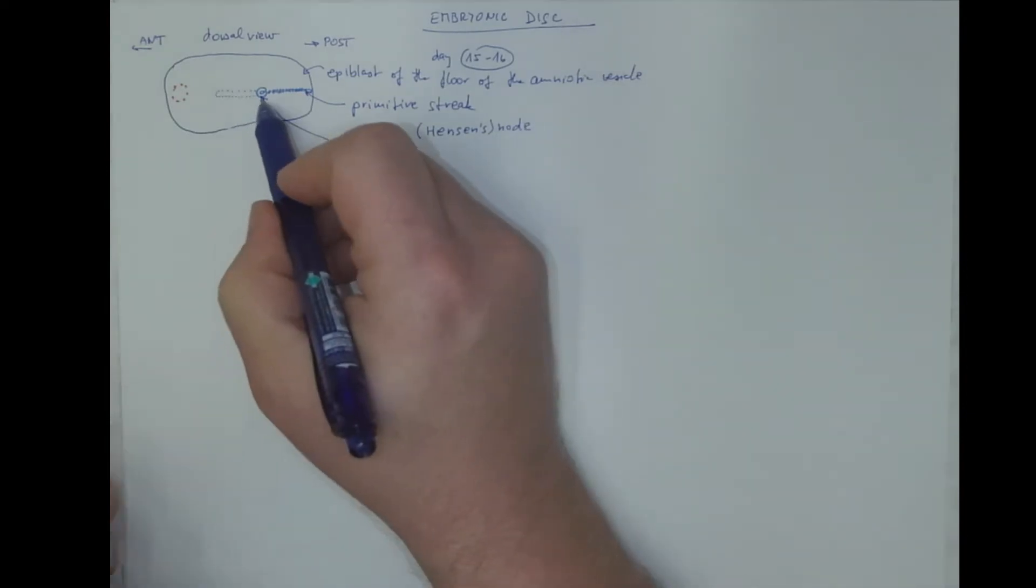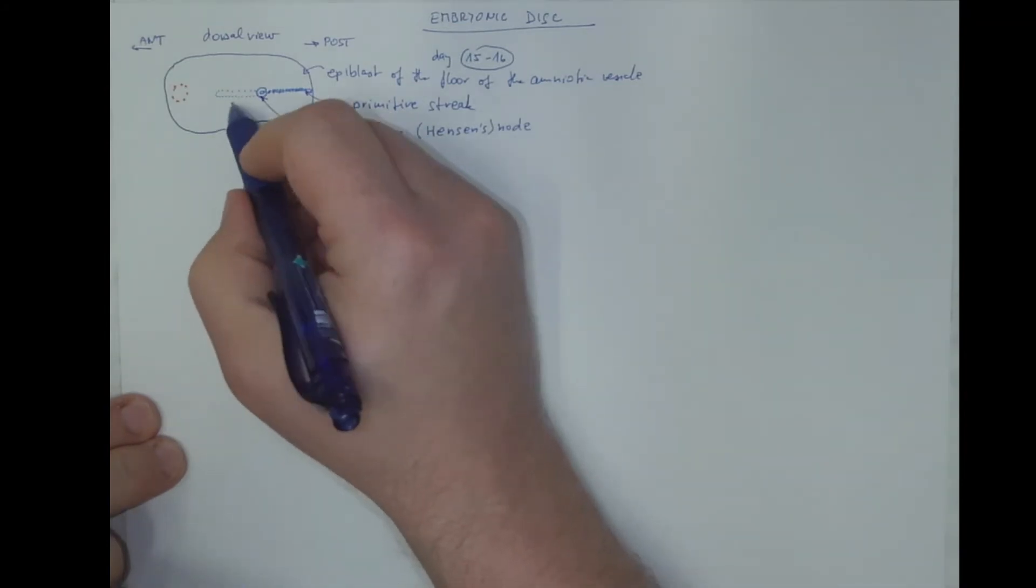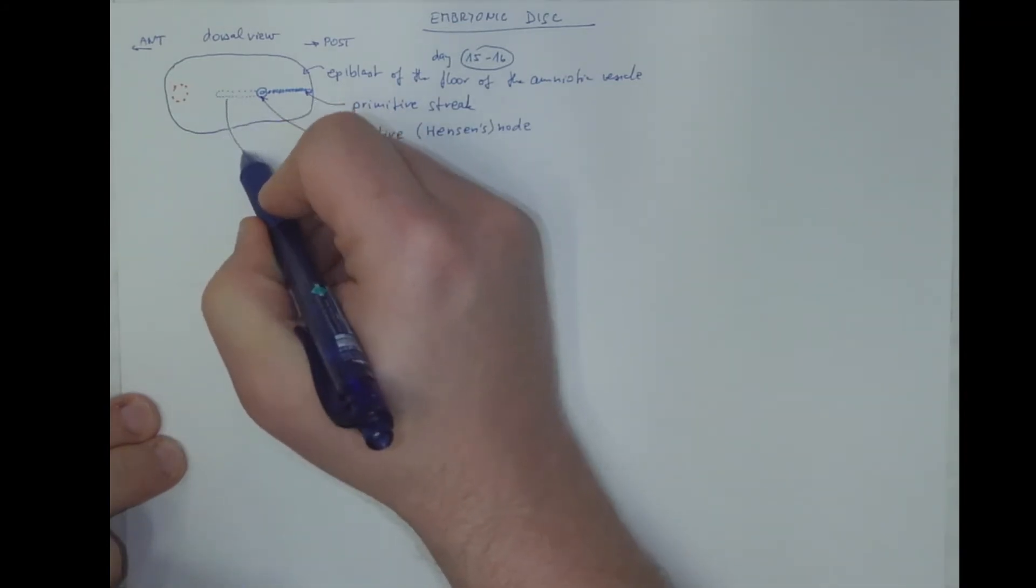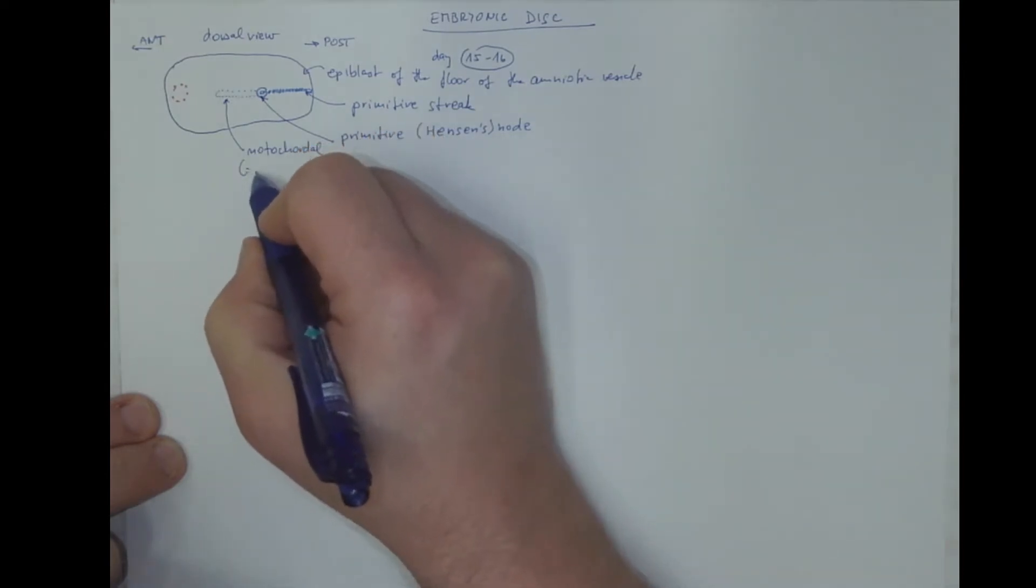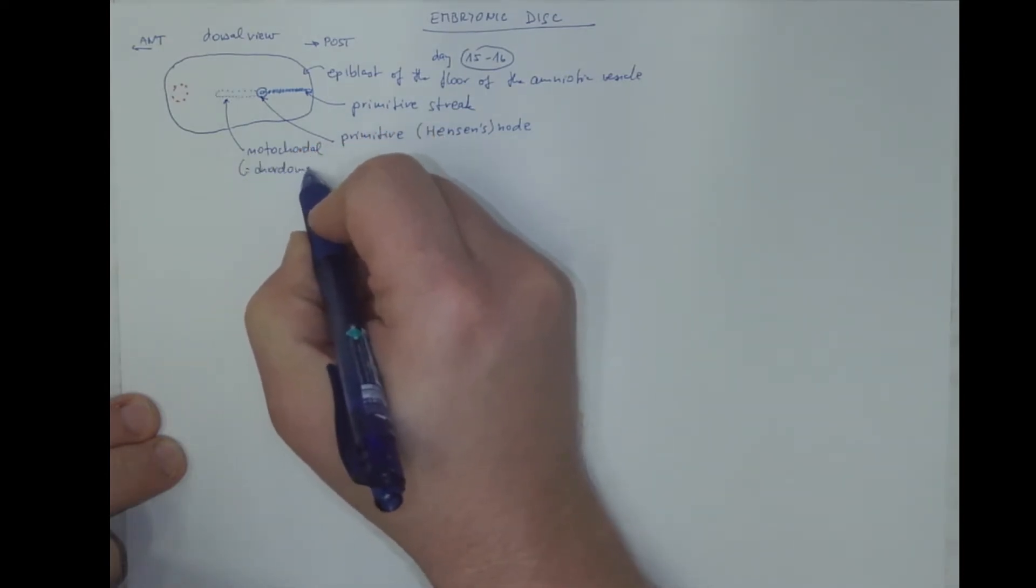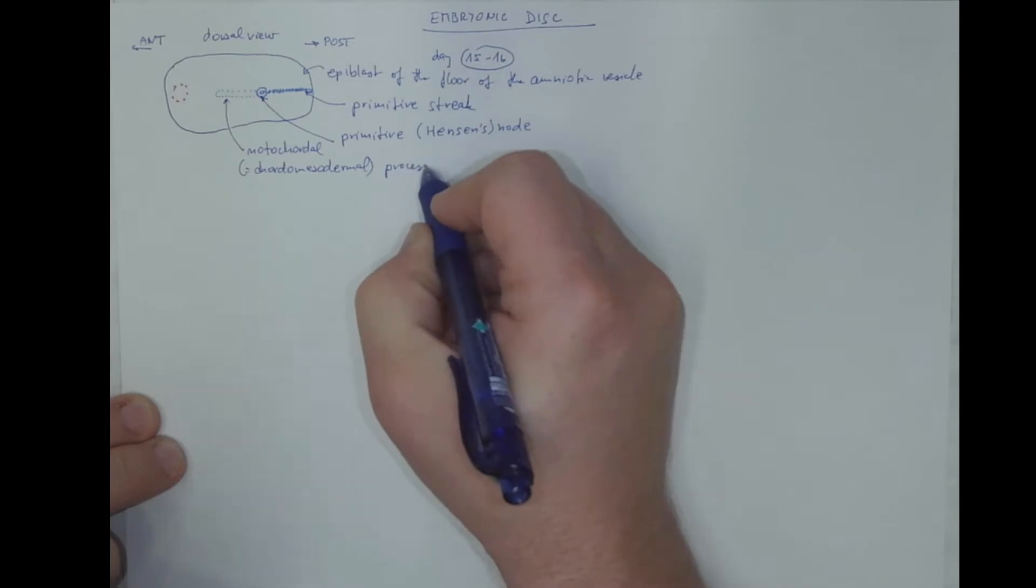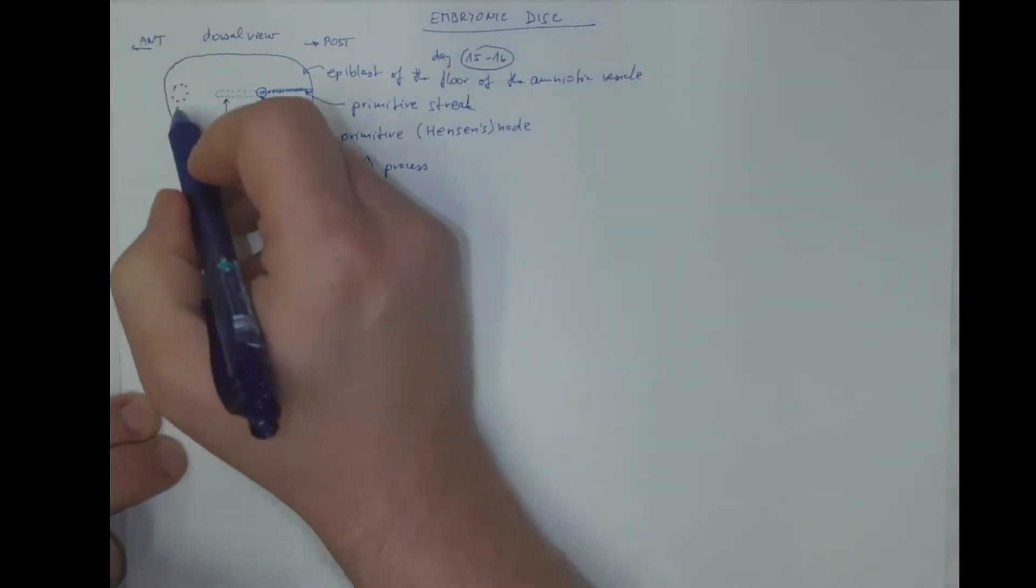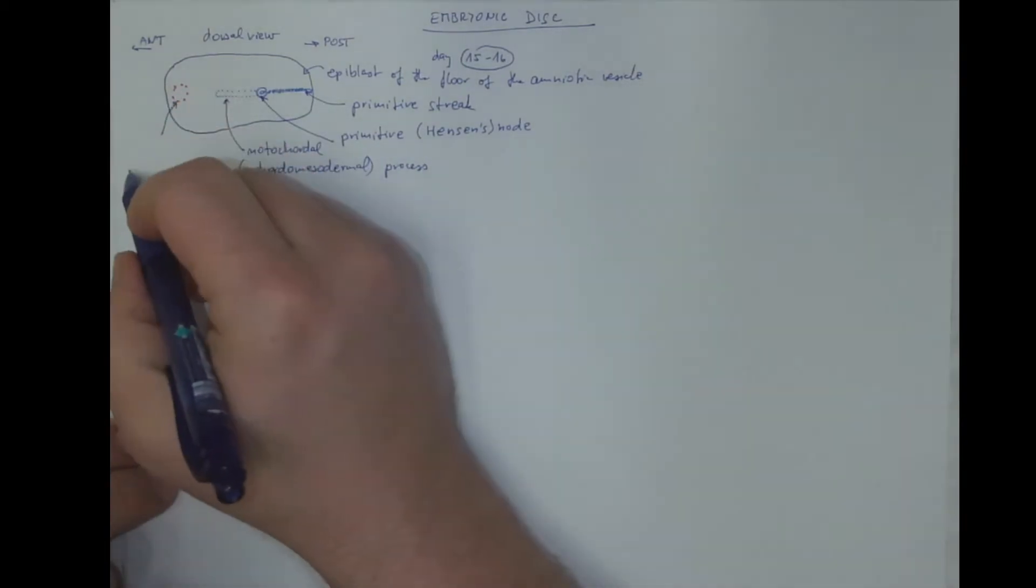That is the organizing center for the growth of another finger-like projection. It grows anteriorly and it's called the notochordial process or chordo-mesodermal process. Cranially, we would see the thickening of the yolk vesicle being transparent here. It's called the precordial plate.